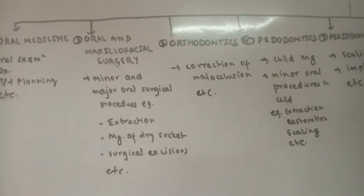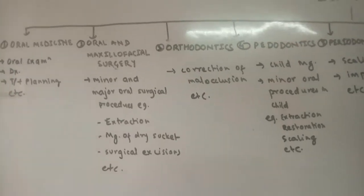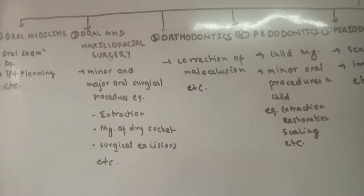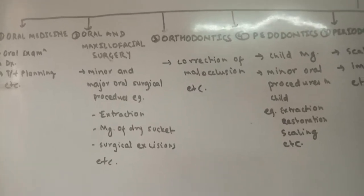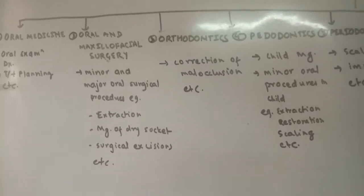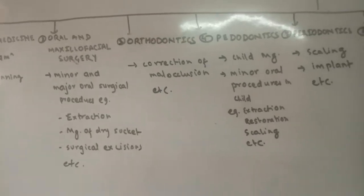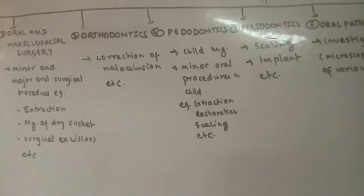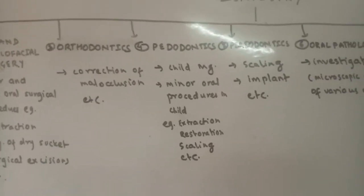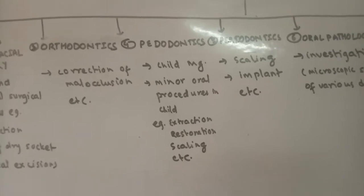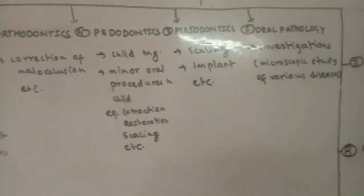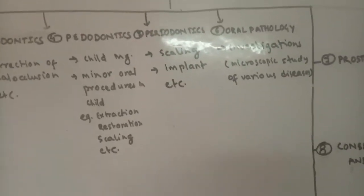The second branch is oral and maxillofacial surgery, which deals with minor and major surgical procedures like extraction, management of dry socket, and surgical excision. The third important branch is orthodontics, which deals with the correction of malocclusion.